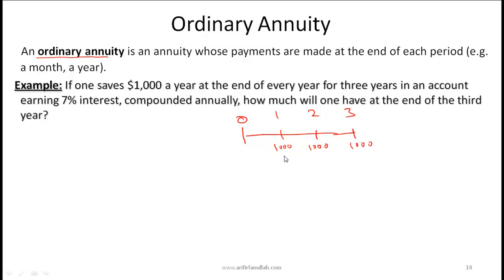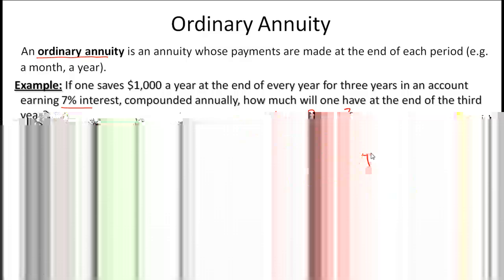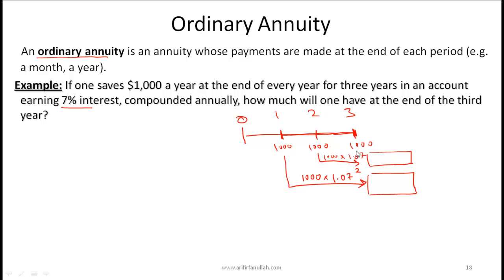This first $1000 is received at the end of year one, so its future value two years later at the end of year three is 1000 times 1.07 squared. The second $1000 at end of year two becomes 1000 times 1.07. The final $1000 at end of year three stays as 1000. The total amount at the end of year three is those three values added together.